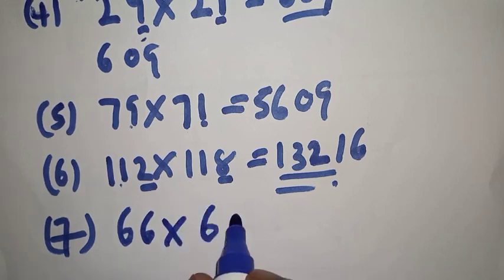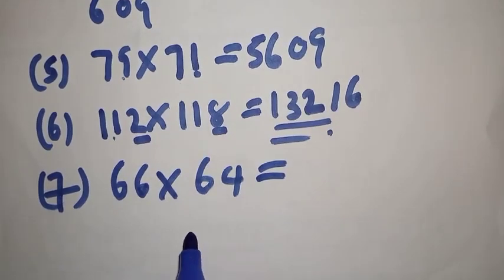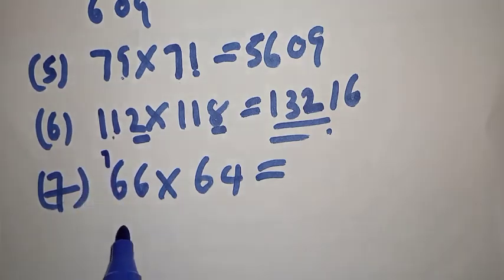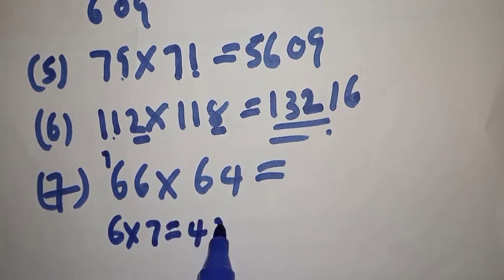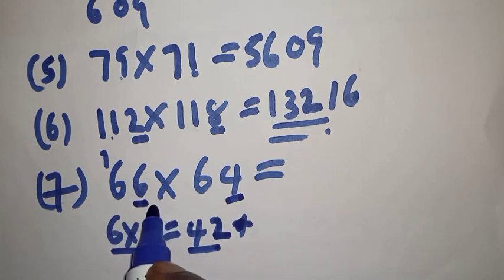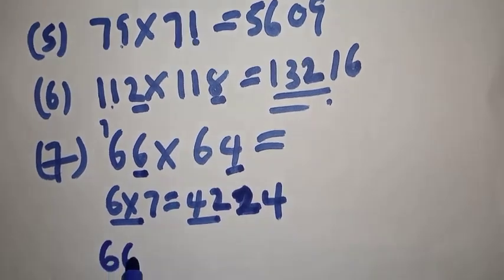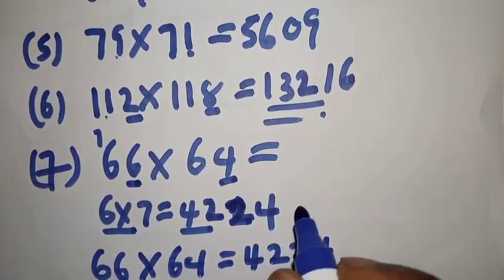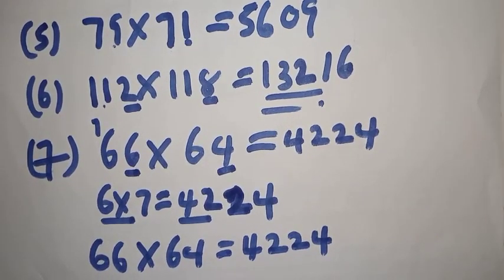Number seven: 66×64. You can try this yourself. The tens digit is 6, the next digit after 6 is 7, so 6×7=42. Write 42. Then the units digits: 6×4=24. Therefore 66×64=4224. That is how you can multiply faster than a calculator.